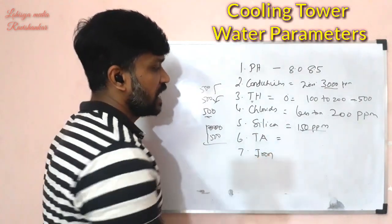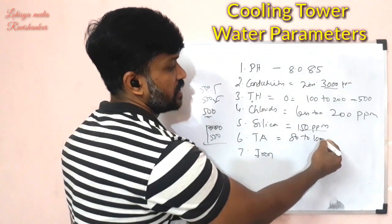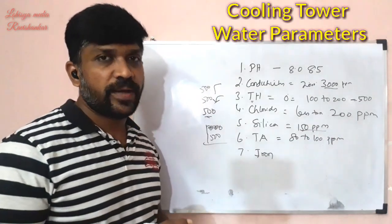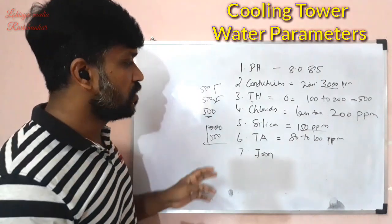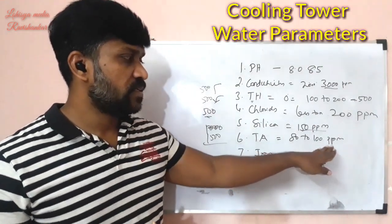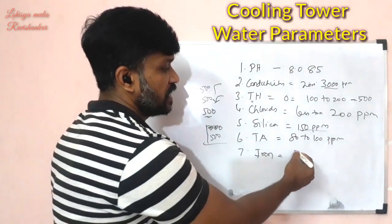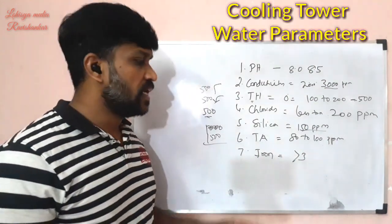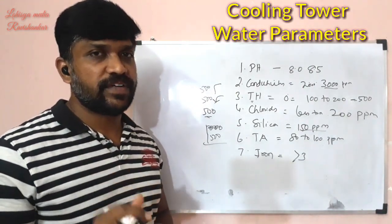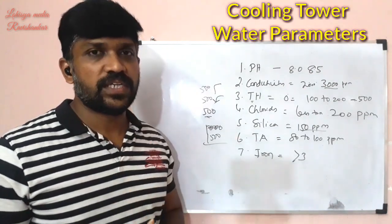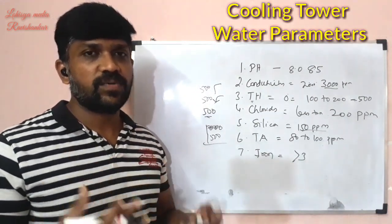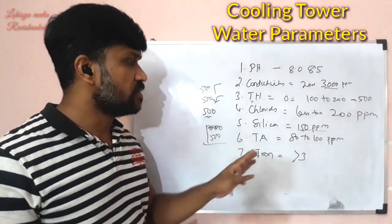The total alkalinity should be maintained at 80 to 100 PPM, based on the hydrogen ion concentration. Iron content should be less than 3 PPM. High iron content will cause corrosion effects in the cooling tower, leading to rusting and metal deterioration. These are the basic parameters: pH, conductivity, total hardness, silica, total alkalinity, and iron.